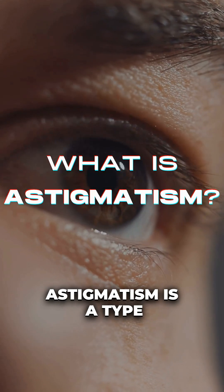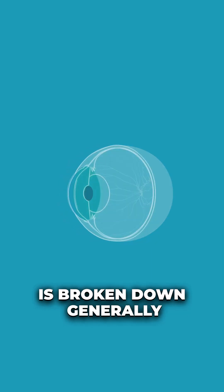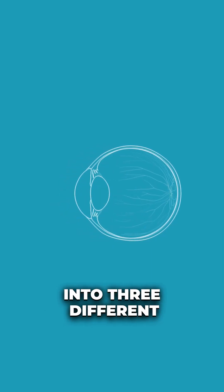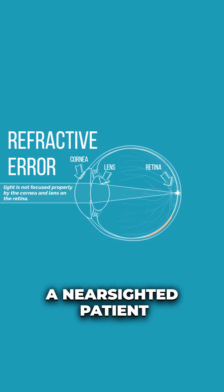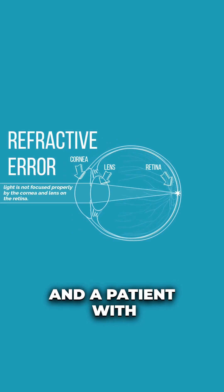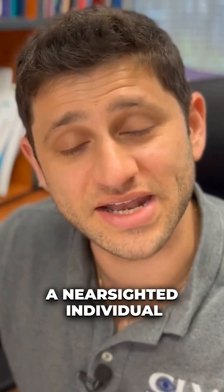Astigmatism is a type of refractive error, but refractive error is broken down generally into three different components on average: a nearsighted patient, a farsighted patient, and a patient with astigmatism.